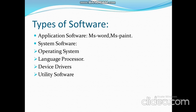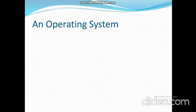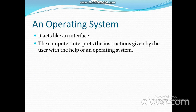Now we shall discuss what is an operating system. Being a machine, a computer cannot do anything on its own — it requires specific instructions on how to perform each and every task. Basically, the operating system acts as an interface. The computer interprets the instructions given by the user with the help of an operating system. It is the master program.